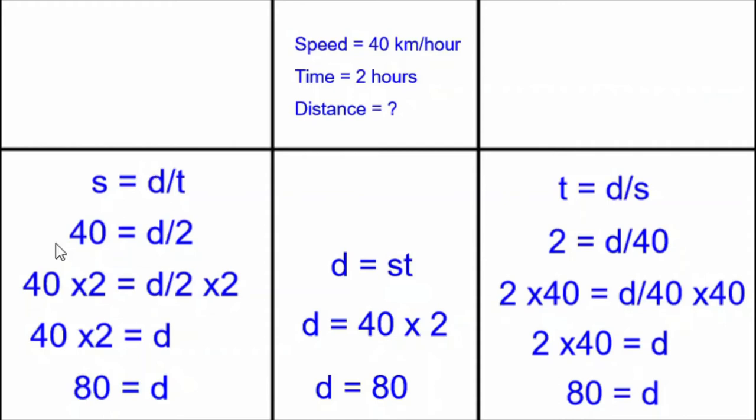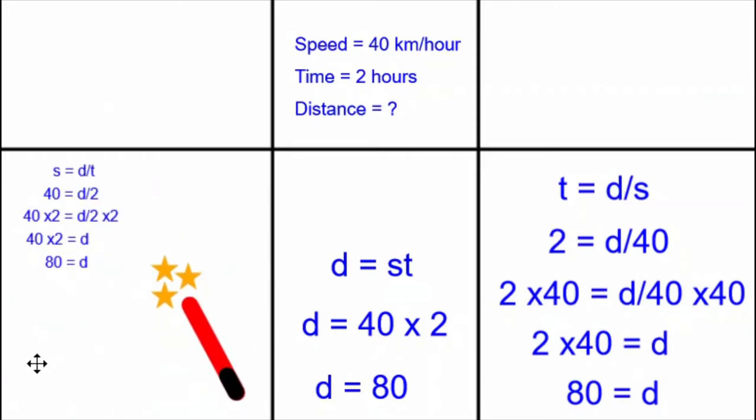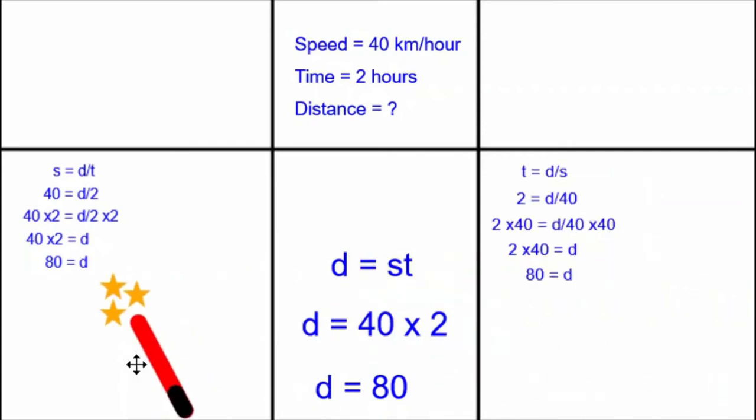First thing I'm going to do is use my magic wand to make this calculation smaller to make room for a new calculation. Now, what is the magic word again? Oh yes, minimize. Minimize. There, that worked. Let's do it over here as well. Minimize. There, we'll put the magic wand away now.